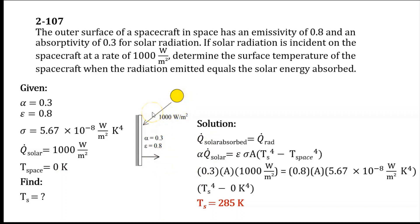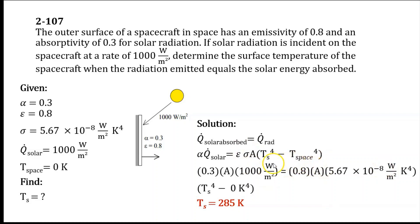The surface temperature can be determined from the energy balance equation: the rate of solar energy absorbed equals the rate of radiation emitted. The rate of solar energy absorbed equals absorptivity multiplied by the solar irradiation rate. The rate of radiation emitted equals emissivity multiplied by the Stefan-Boltzmann constant multiplied by the surface area multiplied by the quantity of the surface temperature raised to the 4th power minus the temperature in space raised to the 4th power.